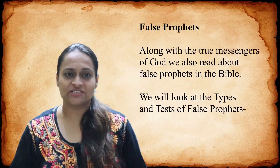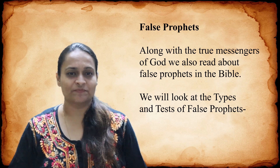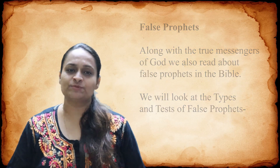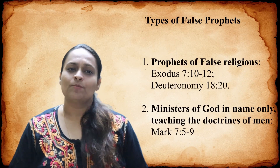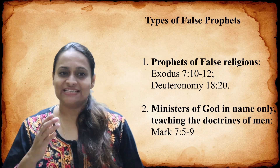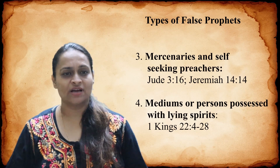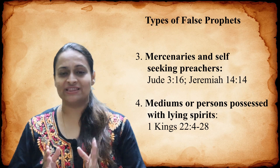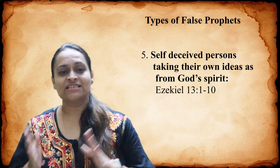Till now we were looking at the true prophets. Now let us also take a look at the false prophets. Along with the true messengers of God, we also read about false prophets in the Bible. We basically have five types of false prophets: first, prophets of false religion; second, ministers of God in name only, teaching the doctrines of men; third, mercenaries and self-seeking preachers; fourth, mediums or persons possessed with lying spirits; fifth, self-deceived persons taking their own ideas as from God's Spirit.